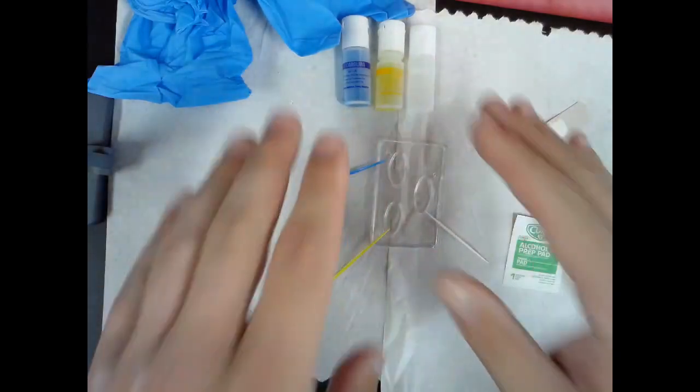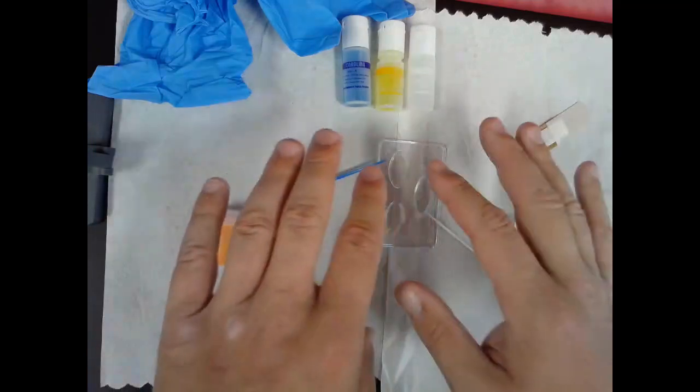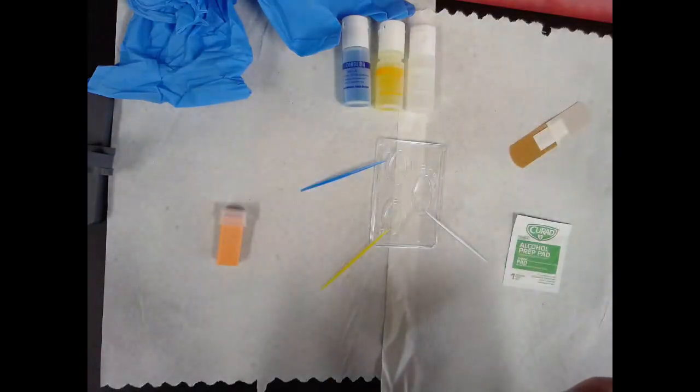An antigen is a unique surface marker to a cell that has the potential to stimulate an immune response, especially if it is a foreign antigen, meaning that's something the immune system has never seen before or encountered. And then we are using antibodies to try to tag these antigens on these red blood cells to see if they are present or not.